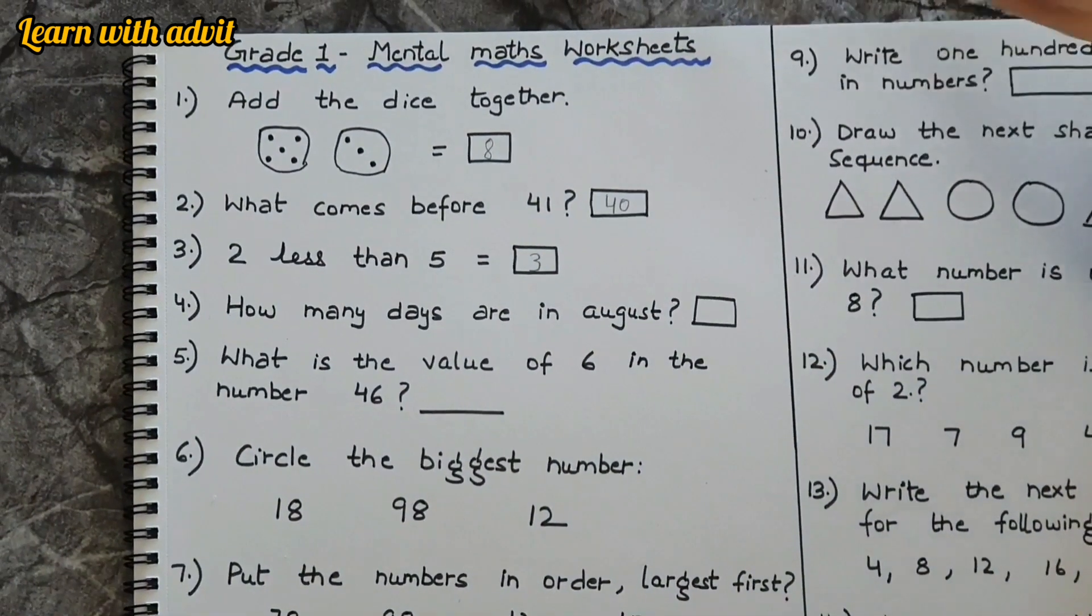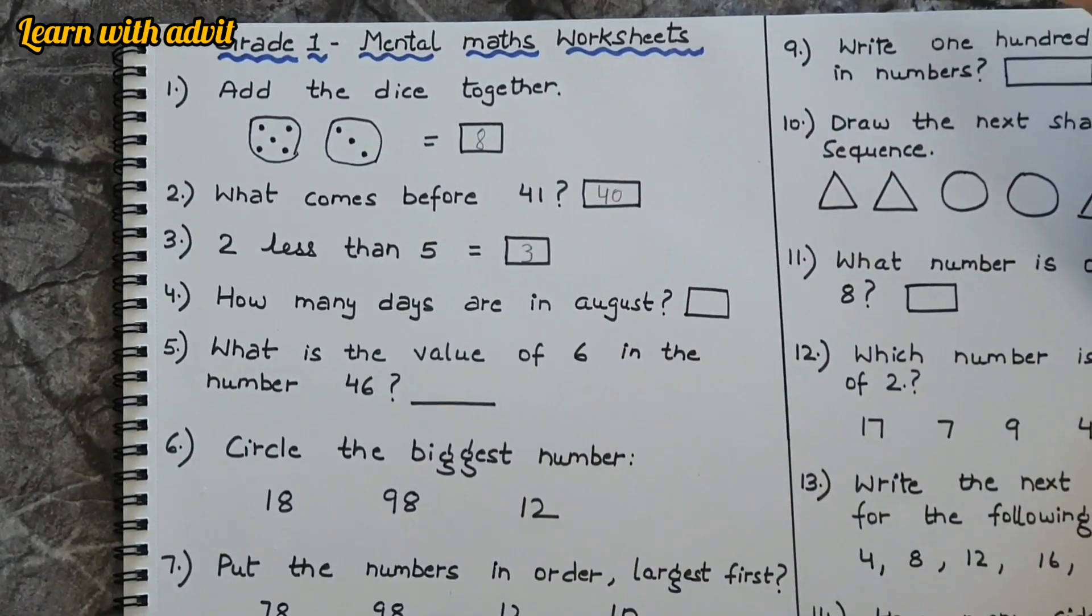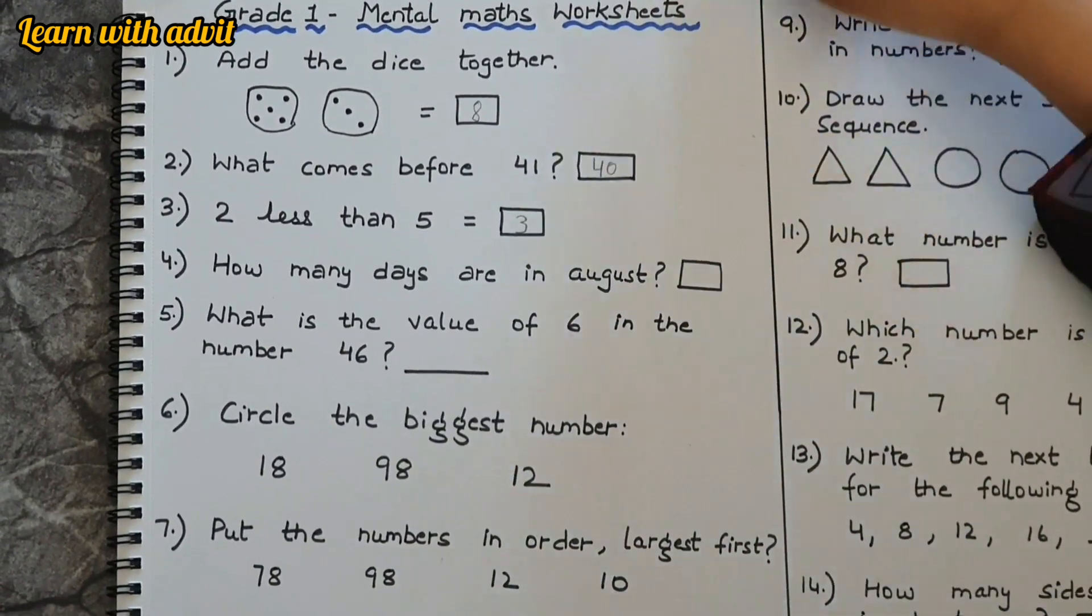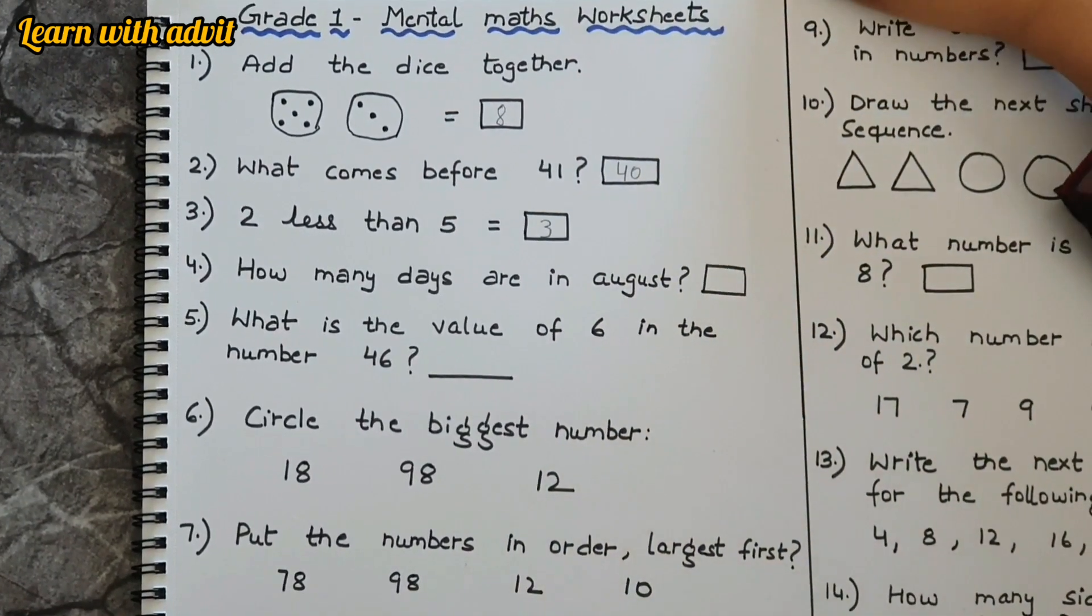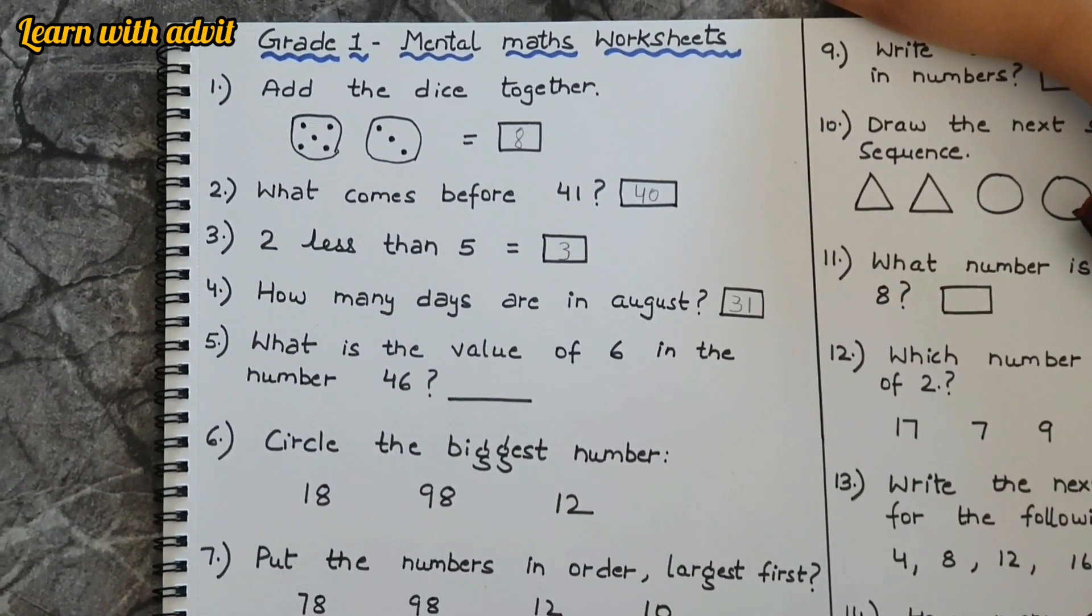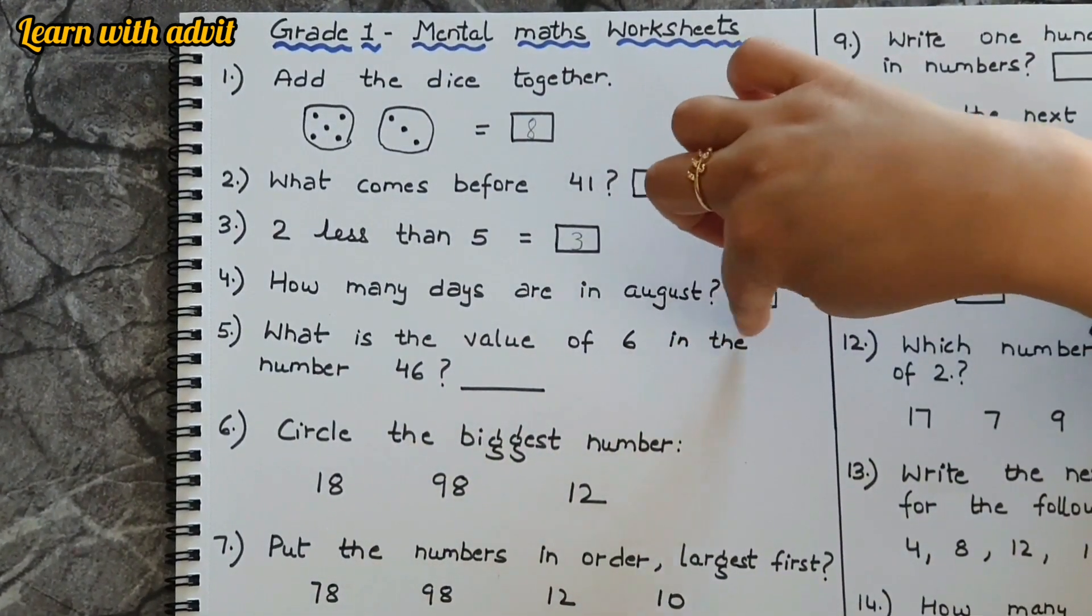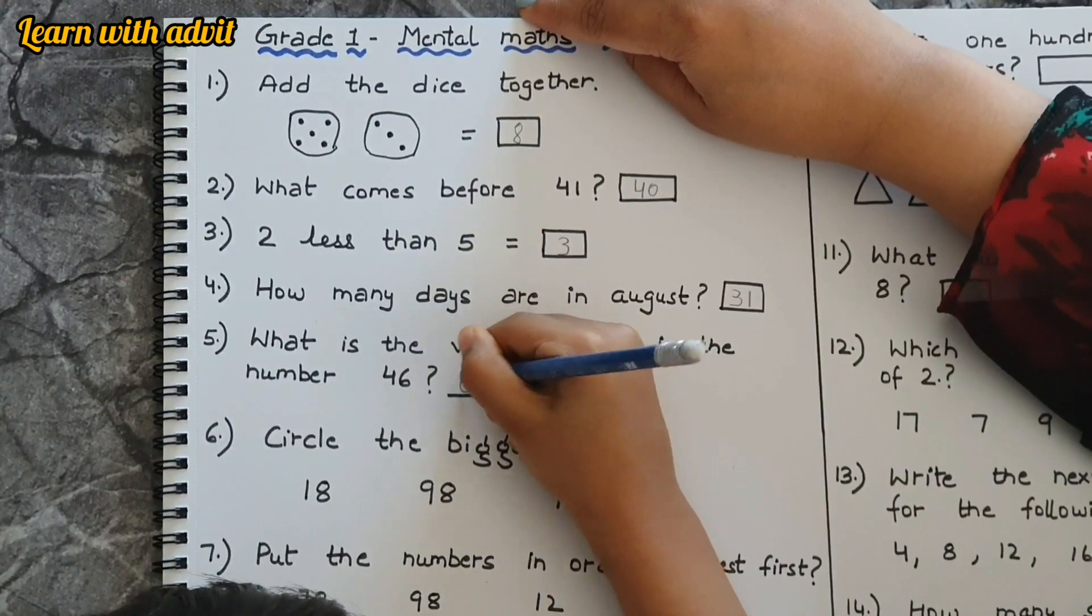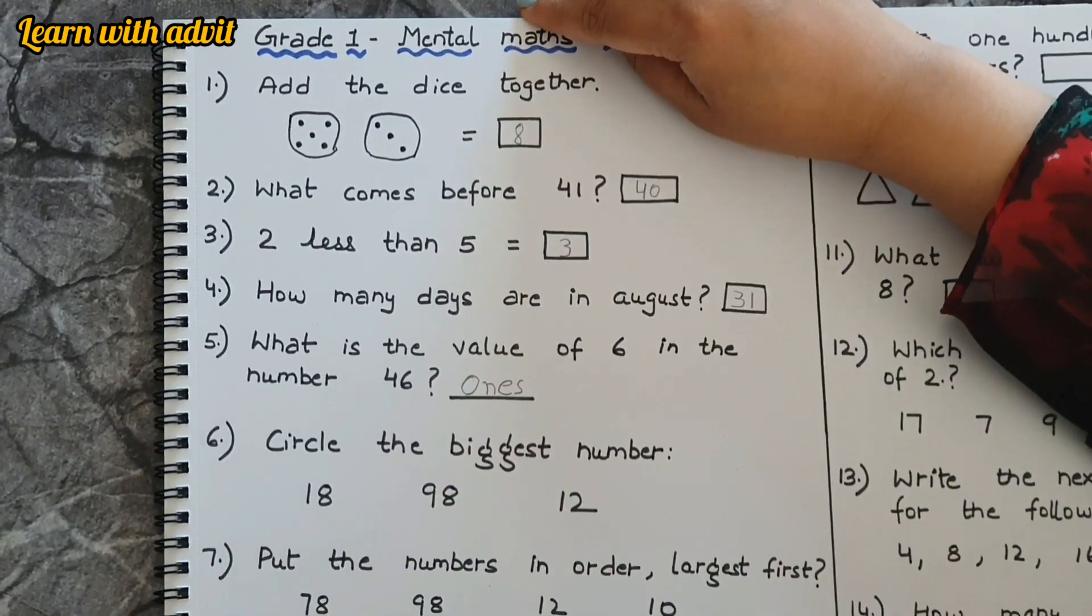How many days are in August? Thirty-one, write it down. And in June? 30, very good. And in February? 28 and 29. What is the value of six in the number 46? It's in the ones place. Very good. And in the number 48, circle the biggest number.